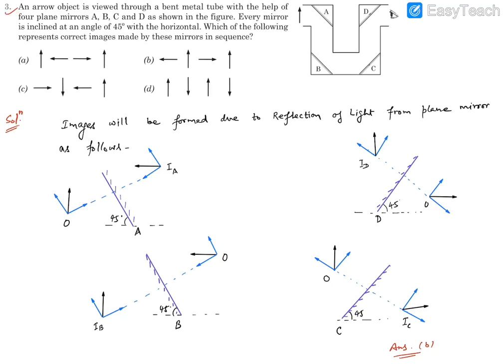Question number three. It reads: an arrow object is viewed through a bent metal tube with the help of four plane mirrors A, B, C and D as shown in this figure. Every mirror is inclined at an angle 45 degree with the horizontal. Which of the following represent correct image made by these mirrors in sequence?